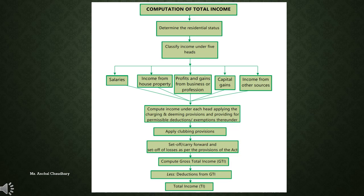Then you have to apply the clubbing provisions — if there is any clubbing of income, you have to club that income into the assessee's income. After that, you have to write off any set-off or carry forward of losses. You have to set off the losses which occurred in the previous year. If you are not able to set off the entire amount, then you carry forward that loss to the next year.